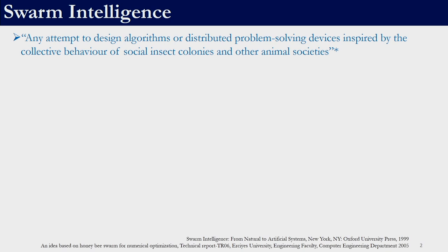Welcome to this session. In this session we will be looking at the Artificial Bee Colony algorithm. Artificial Bee Colony algorithm is a metaheuristic algorithm which was proposed by Karaboga in 2005. It is a swarm intelligence algorithm. Swarm intelligence has been formally defined as any attempt to design algorithms or distributed problem-solving devices which are inspired by the behavior of social insect colonies or other animal societies. One other swarm intelligence algorithm we have seen is particle swarm optimization — this is also a swarm intelligence algorithm.